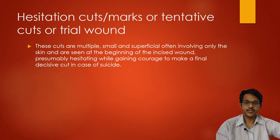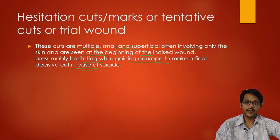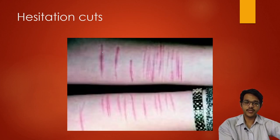Hesitation cuts are seen in suicidal wounds. These are multiple, small, superficial cuts involving only the skin, seen at the beginning of the incised wounds. These presumably indicate the victim was hesitating, trying to gather courage to make a final decisive cut. One of these wounds may be deep enough to cause death. This photograph shows multiple incised wounds on the forearms which may coalesce, with one wound leading to the person's death.